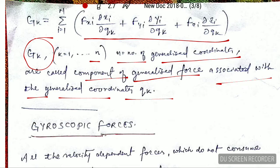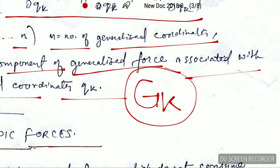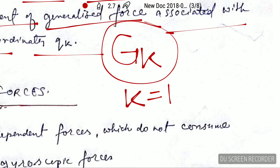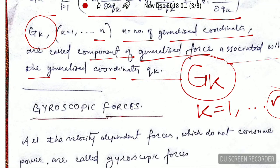I would like to point out that G_k constitutes the total generalized force when you put k from 1 up to n — the number of generalized coordinates — giving all the components of the generalized forces associated with all the generalized coordinates. I hope this video is useful to you. Thank you very much, and if you like this video please share it with your friends.